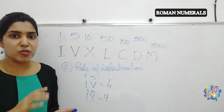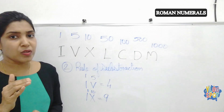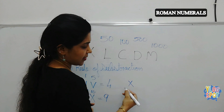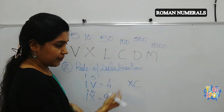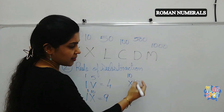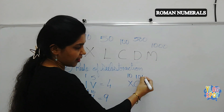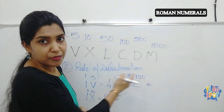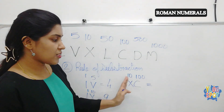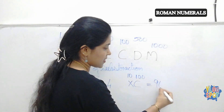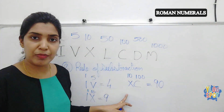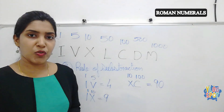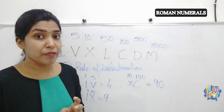Continuing the rule of subtraction — if the first number is smaller than the following number. For example, XC: X represents 10 and C represents 100. The first number is smaller than the next, so 100 minus 10 equals 90. So how do you write 90 in Roman numerals? It is XC. This is the second rule of Roman numerals — the rule of subtraction.